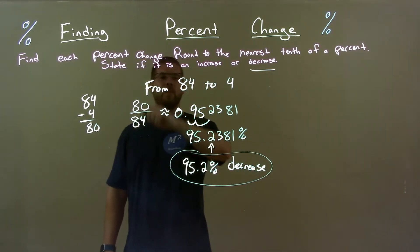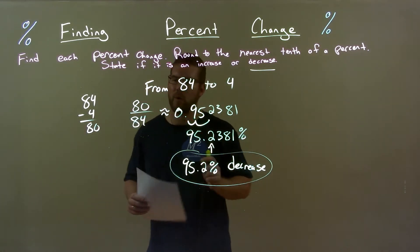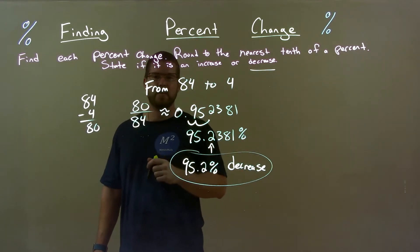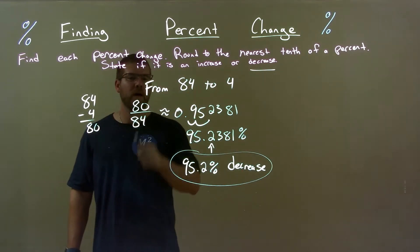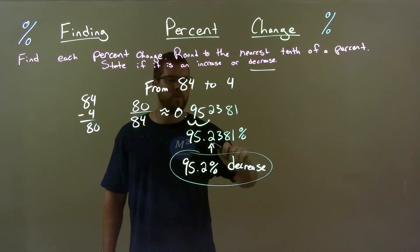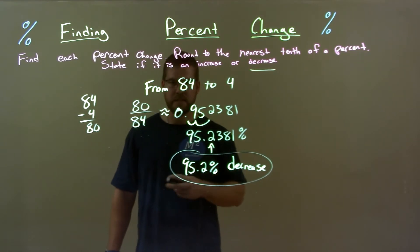Quick recap. We're given from 84 to 4, and we have to find the percent change. We realized that was a decrease, found the difference between the two, divided that by the first number, got a decimal, converted that to a percent, rounded that percent, and got our answer: 95.2% decrease.